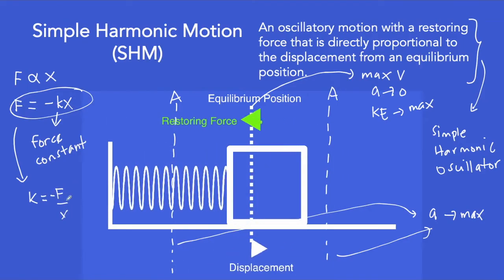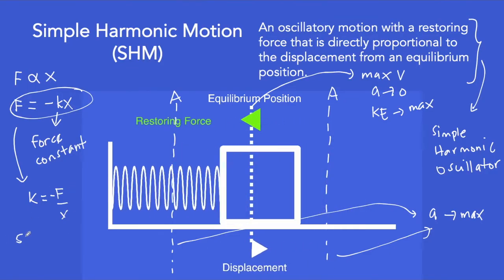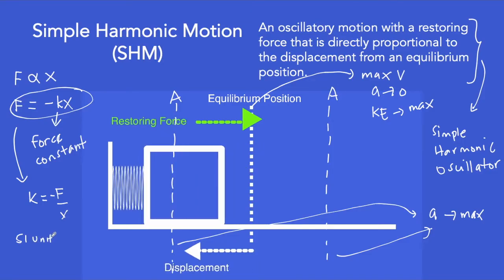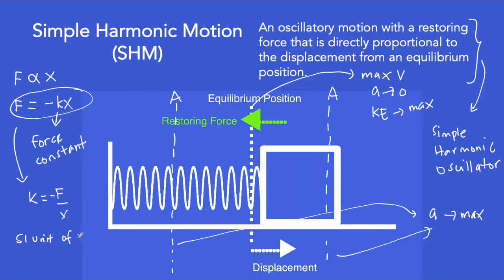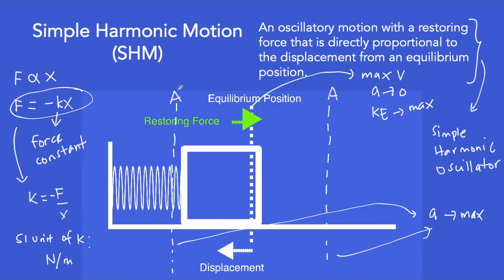Since the SI unit of force is newton and the SI unit of displacement is meter, then the SI unit of this constant of proportionality is newton per meter.